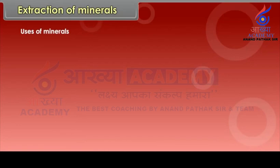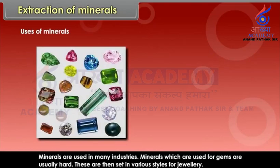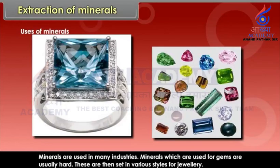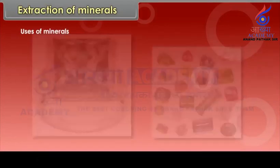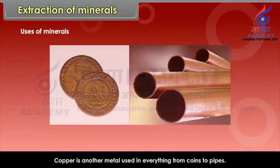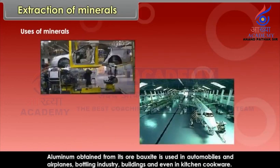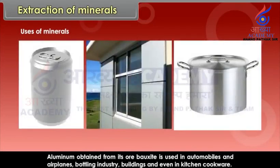Uses of minerals. Minerals are used in many industries. Minerals which are used for gems are usually hard and are set in various styles for jewellery. Copper is used in everything from coins to pipes. Silicon used in the computer industry is obtained from quartz. Aluminium, obtained from its ore bauxite, is used in automobiles and airplanes, the bottling industry, buildings and even in kitchen cookware.